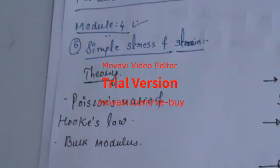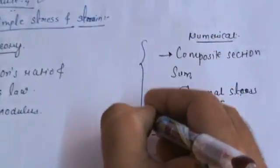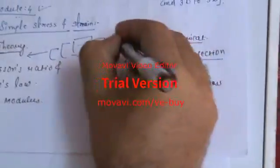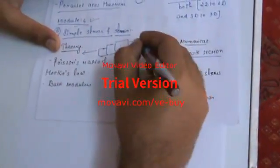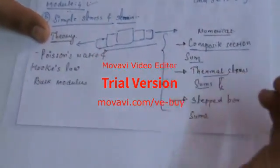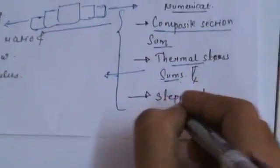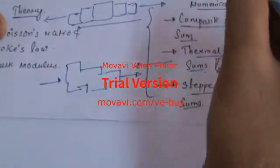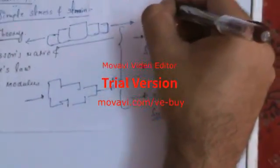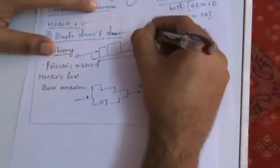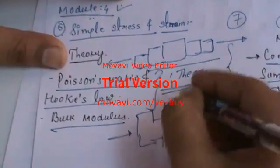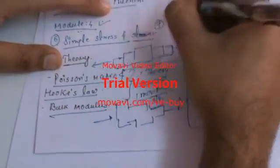Module 4 covers simple stress and strain. Only 3 types of numericals are asked: composite section sums involving two bars with applied forces, thermal stresses sums with minor formula variations, and step bar sums. One numerical will surely be asked from this portion, so you can expect 7 marks. In the theory portion, Poisson's ratio, Hooke's law, and bulk modulus each have a sure-shot chance of appearing as a one-marker or 3 to 4 mark theory question.